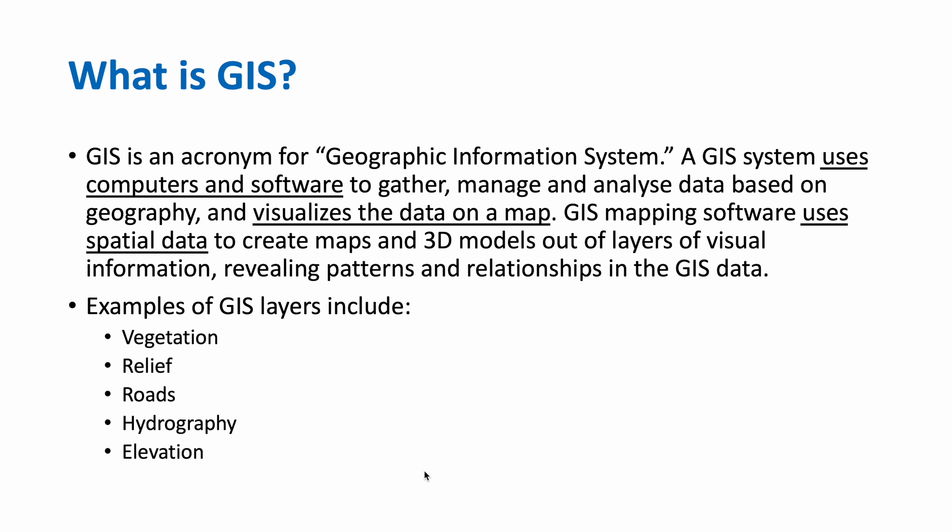So what is GIS? GIS is an acronym for Geographic Information System. A GIS system uses computers and software to gather, manage, and analyse data based on geography, and visualises the data on a map. GIS mapping software uses spatial data to create maps and 3D models out of layers of visual information, which reveals patterns and relationships in the GIS data. Some examples of GIS layers include vegetation, relief, roads, hydrography, and elevation.